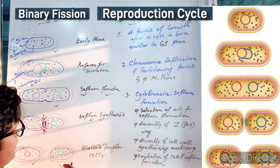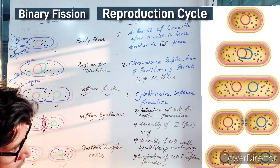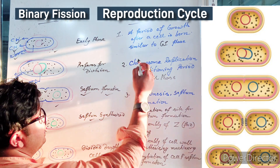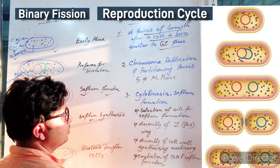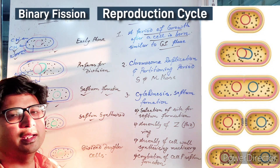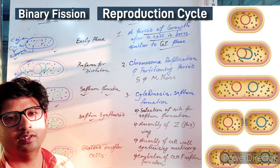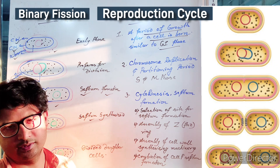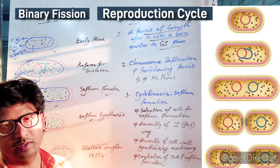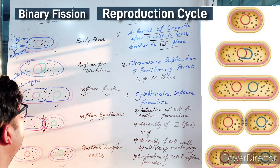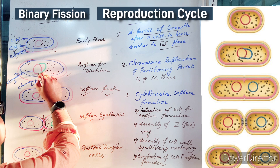If you consider it through the cell cycle in eukaryotes, you can consider it as a G1 phase, where they grow themselves — a period of growth after a cell is born. They will enhance their cellular capabilities, increase internal materials, and prepare themselves for a further round of division. This preparation time can be considered as the G1 phase of the eukaryotic cell cycle. Now the cell prepares for division and chromosome synthesis has started.